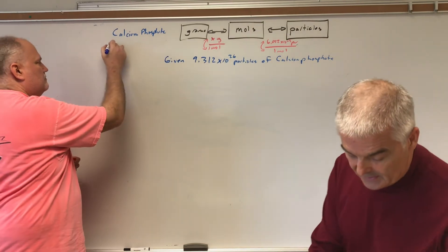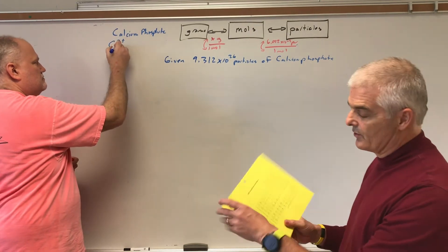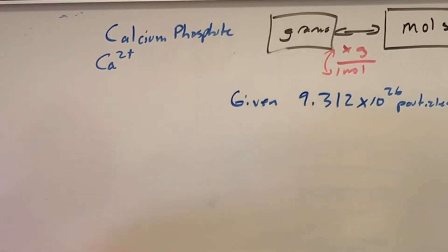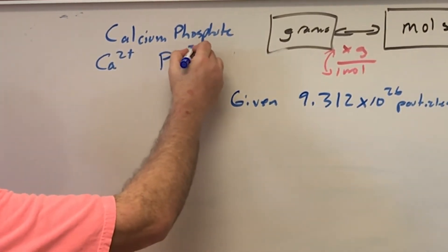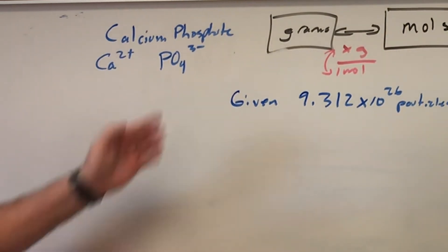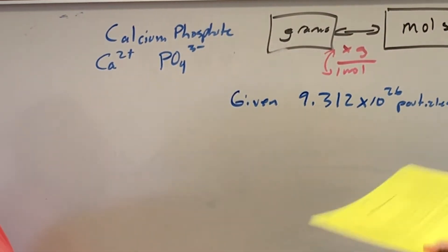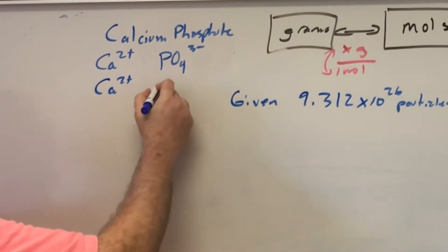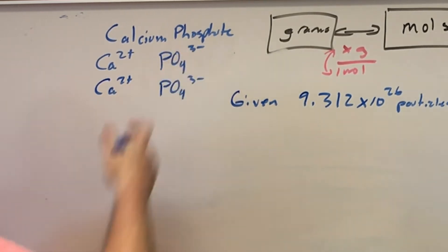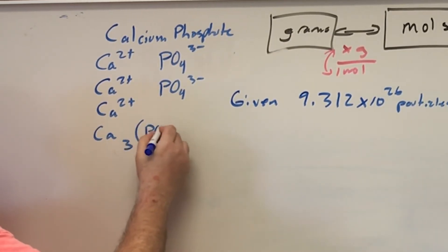Calcium from the periodic table is in column number two, alkaline earth metal, so his charge is two positive. Phosphate from our polyatomic ion is PO4^3-. Those don't add up to zero. So we're going to play this game. Put Ca2+, add another phosphate, then six. Give me another calcium and then we have the answer. So this would be Ca3(PO4)2.